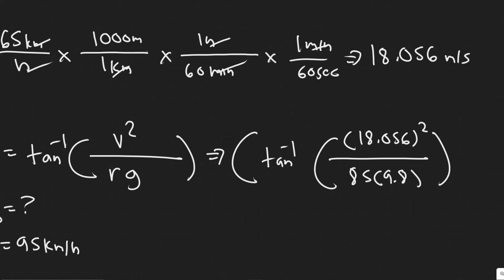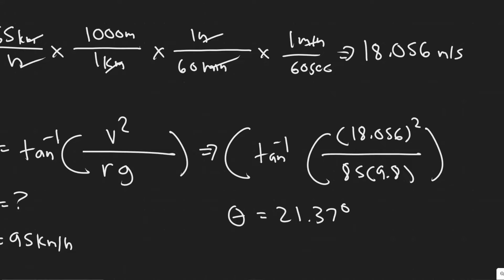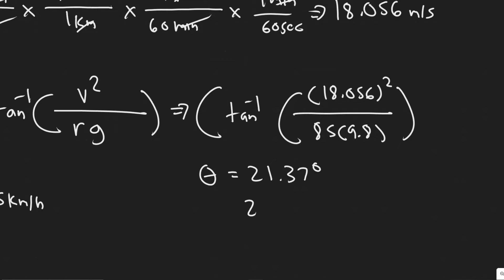Now we plug into the formula: theta = arctan(v² / (r·g)) = arctan(18.056² / (85 × 9.8)), where 9.8 m/s² is acceleration due to gravity. Using the exact calculator value, we get our angle theta equal to 21.37 degrees.